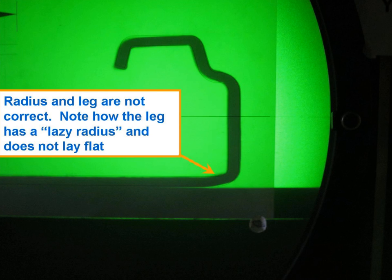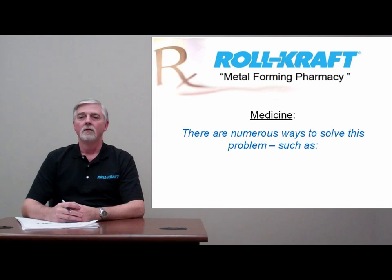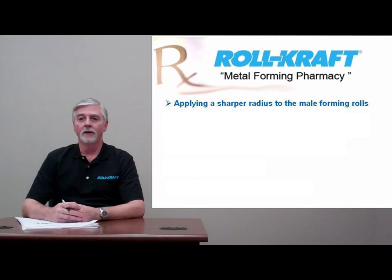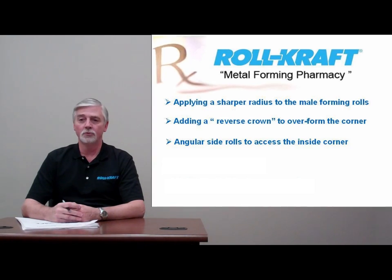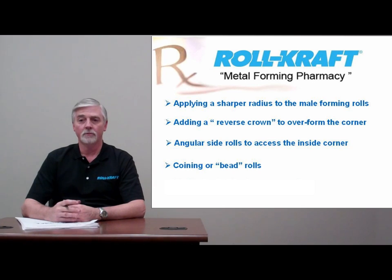Whatever the factor may be, this effect is common in the roll forming industry. There are numerous ways to solve this problem, or at least to minimize it, such as applying a sharper radius to the male forming rolls, adding a reverse crown or bend to over-form the corner, or using angular side rolls to access the inside corner.